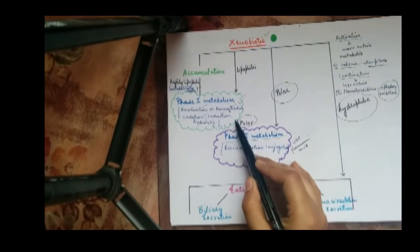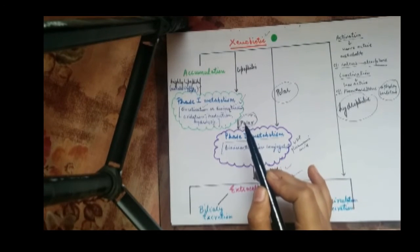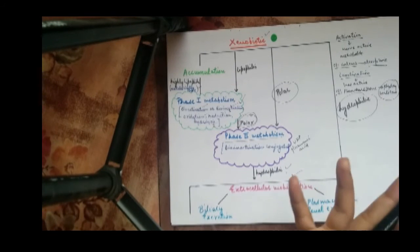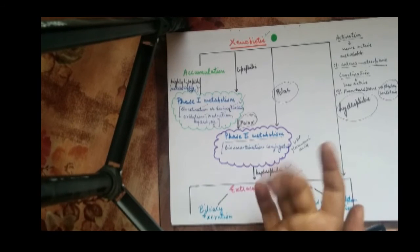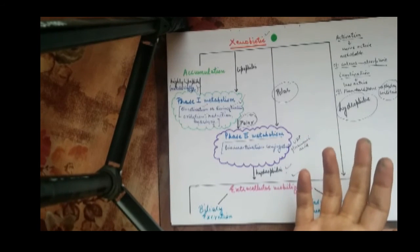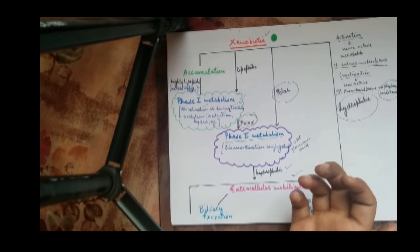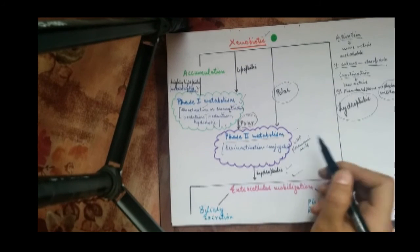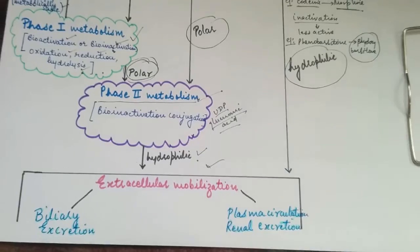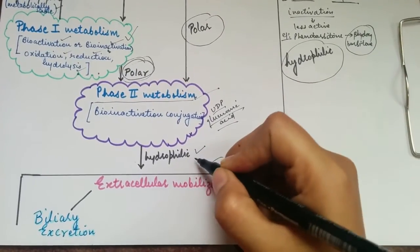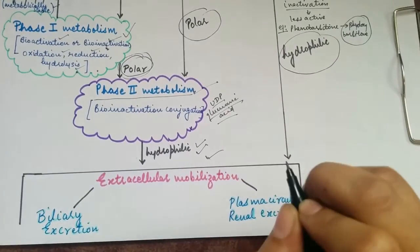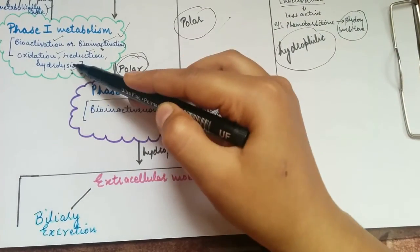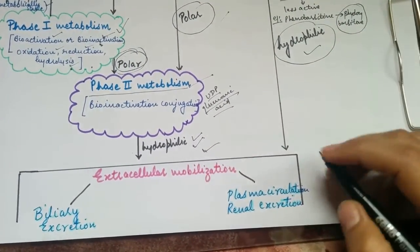After the phase one metabolism reactions, the xenobiotic has now become more polar, meaning the drug is now less lipophilic. But our ultimate goal is to make it hydrophilic so that it can be eliminated from the body via urine. This hydrophilicity is provided by the phase two reaction, which occurs via conjugation of the xenobiotic with certain compounds such as UDP-glucuronic acid. Ultimately, the compound becomes hydrophilic and is excreted via urine. However, if the substance is polar, phase one metabolism is bypassed, and if it is hydrophilic, it can be easily removed from the body.